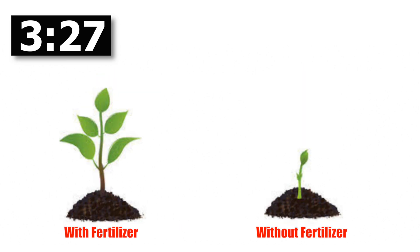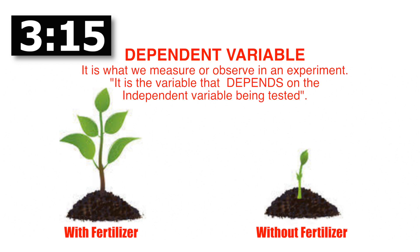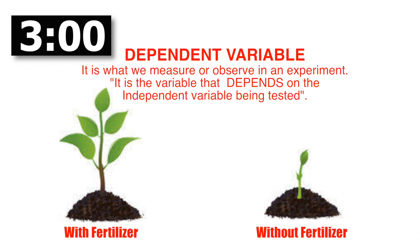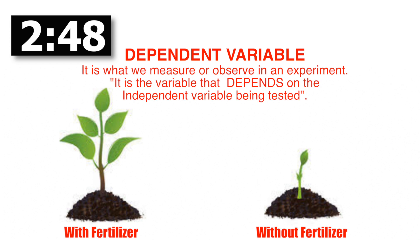The plant that received fertilizer showed a positive effect — it grew much faster and healthier than the plant with no fertilizer. What we're measuring is called the dependent variable. Think of it this way: children are dependents of their parents. So the dependent variable is always dependent on the independent variable. Had there been no fertilizer, both plants would have grown the same. The dependent variable is always what you're measuring or observing — the thing you hope to see change. If there's no change, the independent variable had no effect.